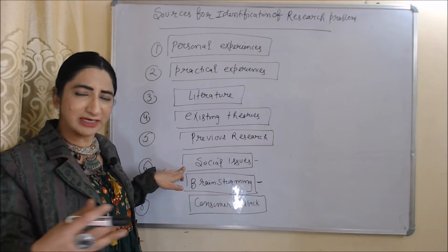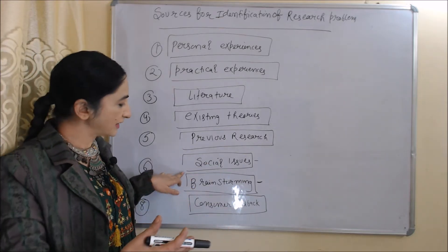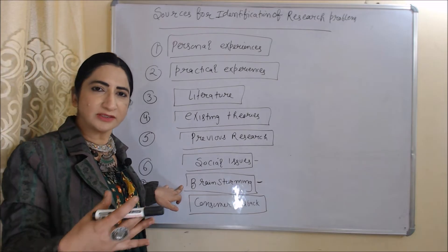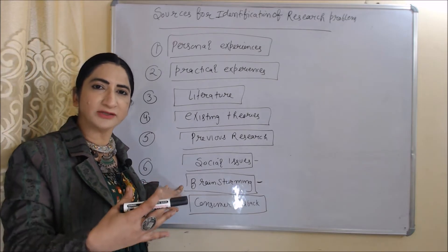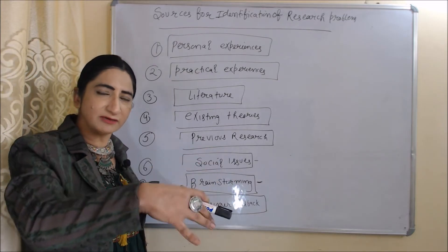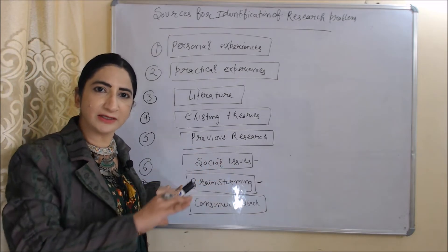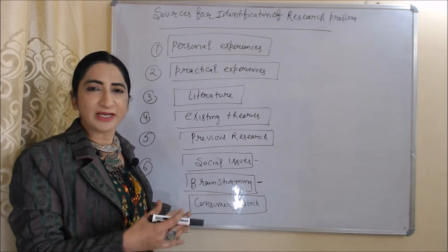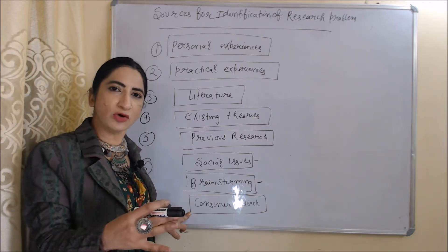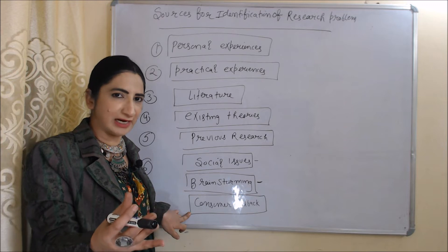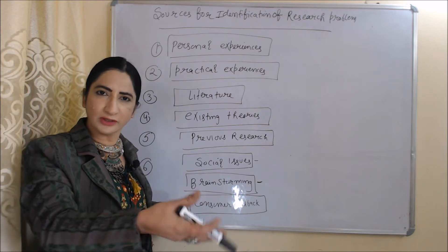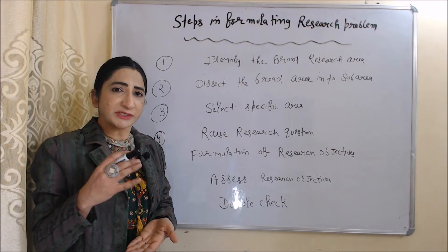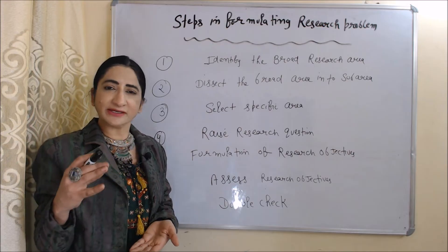You can also select any social issue that is impacting many people. Next is brainstorming — you can find your research problem by discussing with people in a group. Last is consumer feedback — if you are doing business or a job, then you can take an idea for a research problem from your consumer feedback.